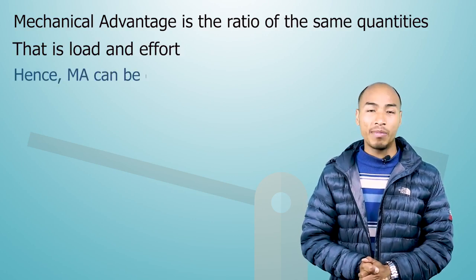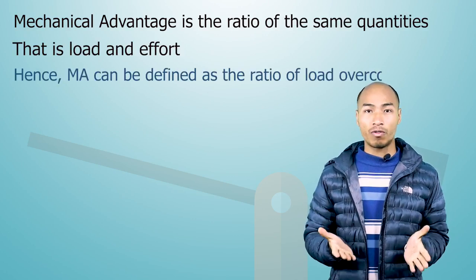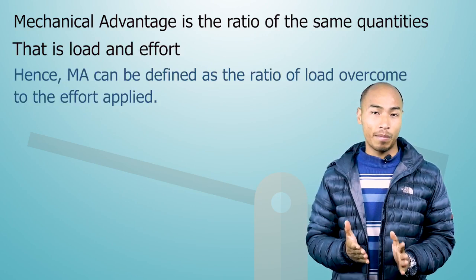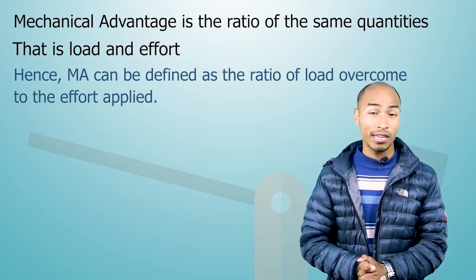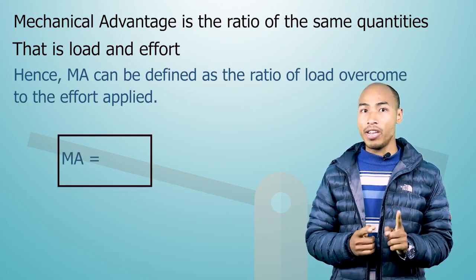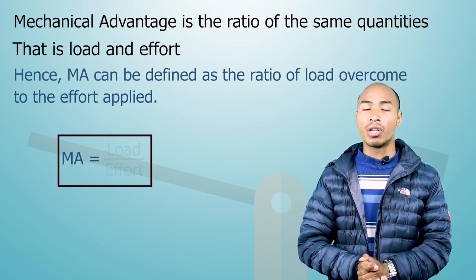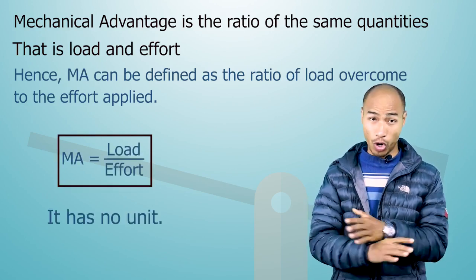Hence, mechanical advantage can be defined as the ratio of load overcome to the effort applied. Mechanical advantage can be mathematically defined as MA or mechanical advantage equals load divided by effort and it has no unit.